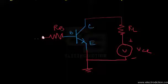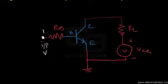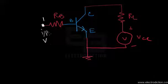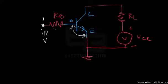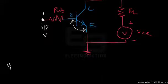Let's call the free end of RB terminal 1. At terminal 1 we apply an input voltage according to our will. When we apply an input voltage here, a part of this voltage will fall across the base and emitter terminals, and the rest will fall across the base resistance RB, as we know from basic circuit theory. The part falling across base-emitter is measured with respect to the grounded emitter terminal.